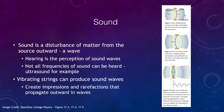Let's review sound a little bit. We looked at this in a previous lecture, but sound is a disturbance of matter from the source outward — that is a wave. A wave is a disturbance that propagates outward from where it formed. So sound is an example of a wave; it is a disturbance of matter, which means it has to propagate through some kind of material.